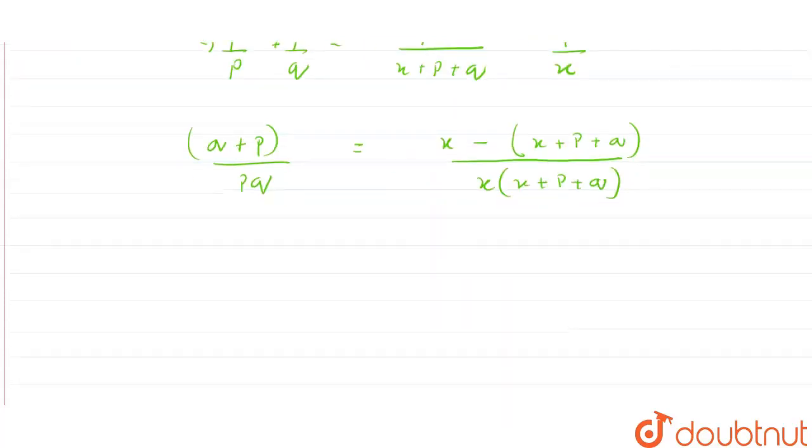Now here we can write that this is minus of p minus of q divided by x times (x + p + q), and this is (p + q) divided by pq.